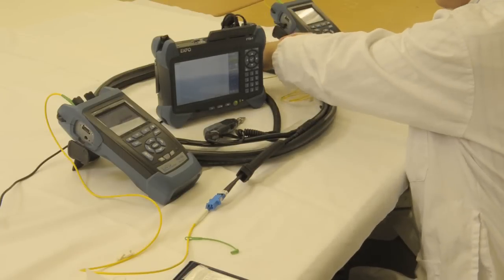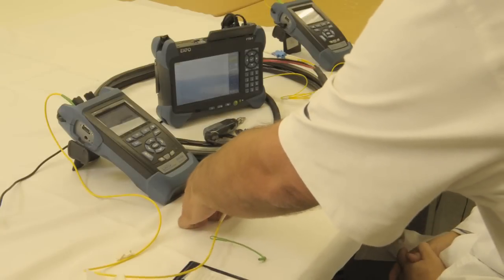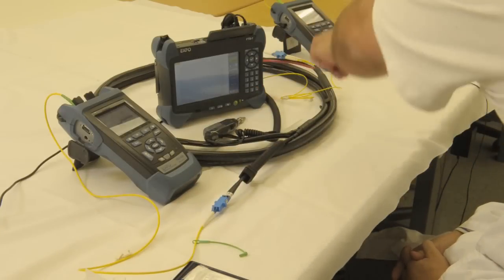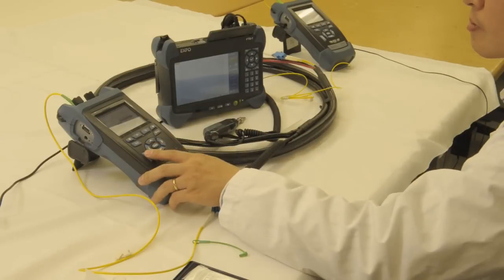So we have to make sure that the launch and receive cables correspond. We see the jumper has numbers here. We have one here, one on the far end, so we have our launch and receive cables both on one. We're going to go ahead and do our fast test.